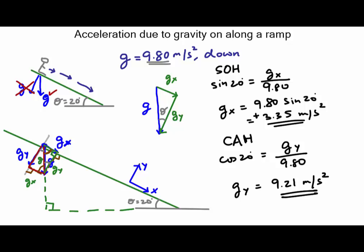So as our child accelerates down the ramp they don't feel the full force of g, they only feel gx which is only 3.35 meters per second squared, a lot less than 9.80, which is why kids enjoy slides but they don't enjoy falling down from the top of the slide.